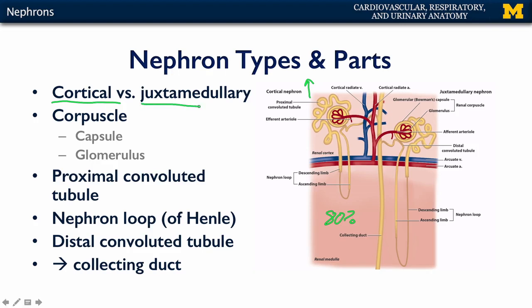There are also juxtamedullary nephrons. Juxtamedullary nephrons are the first ones that are being fed by afferent arterioles off of the cortical radiate arteries. These sit lower in the cortex, and they have a very elaborate nephron loop that goes very deep into the medulla. Juxtamedullary nephrons are only about one-fifth of the total population of nephrons in the kidney.